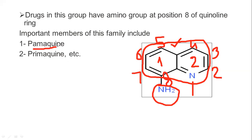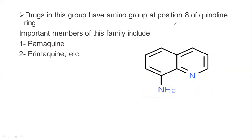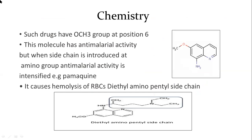The important drugs that come from 8-aminoquinolines are: Pamaquine, Primaquine, and Pentaquine. So there are 3 basic drugs we will discuss. In the chemistry section, we will discuss the SAR.